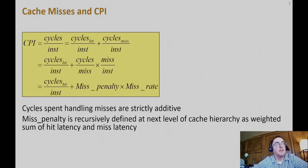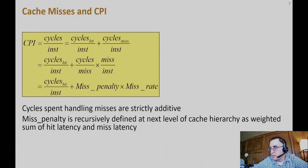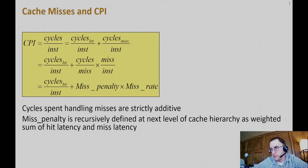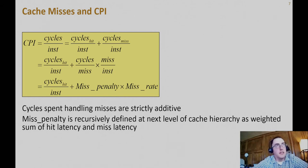Breaking apart the CPI into how many cycles an instruction requires on a hit versus a miss: this affects all instructions because the instruction cache can hit and miss. Data cache misses apply only to instructions that access the data cache — loads and stores. We have hit cycles per instruction, plus cycles per miss multiplied by miss rate (misses per instruction). Cycles per miss is the miss penalty; misses per instruction is the miss rate.